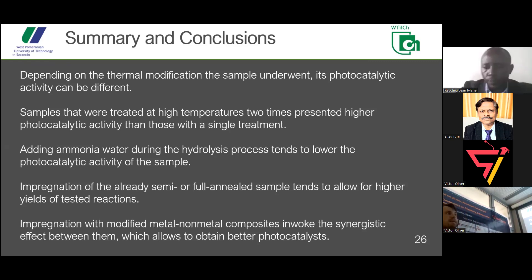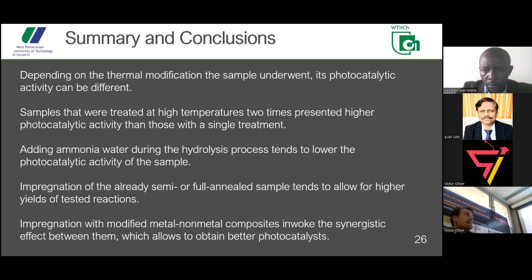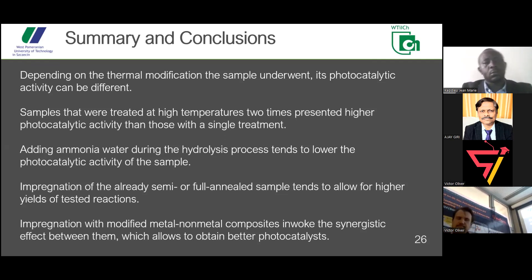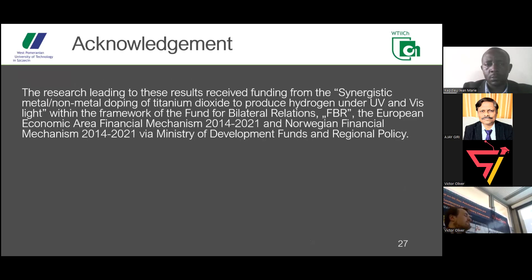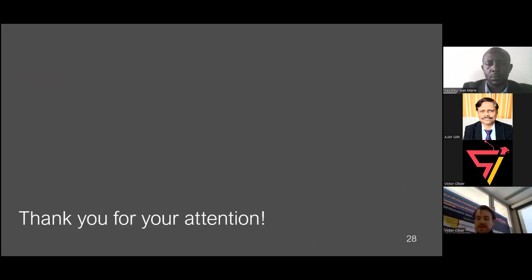In summary: depending on the thermal implementation method of cobalt, we can obtain differently performing samples. The more steps the sample undergoes, the better it is — both reactor or solvothermal method followed by furnace treatment is preferable. We would also want to avoid using ammonia water. Impregnation with a metal-nonmetal compound is better than just metal or just nonmetal alone. This research was partially funded by the referenced grant. Thank you very much.